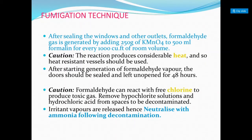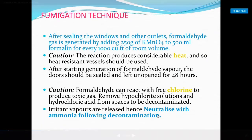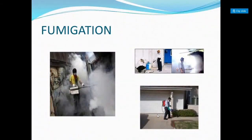During COVID-19, municipal corporation employees fumigated houses where positive patients were found. The fumigation procedure: after sealing windows and other outlets, formaldehyde gas is generated by adding 250 g of KMnO4 to 500 mL of formalin for every 1000 cubic feet of room volume. Caution: the reaction produces considerable heat, so heat-resistant vessels must be used. After starting vapor generation, the door is sealed and left for 48 hours.